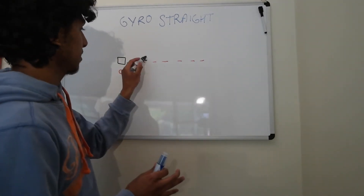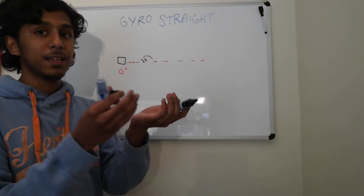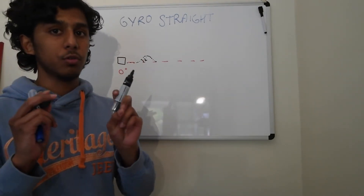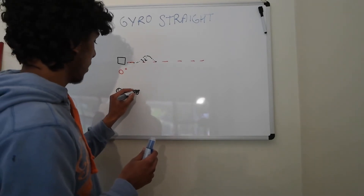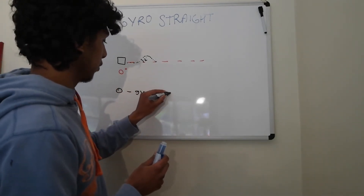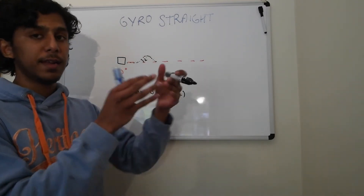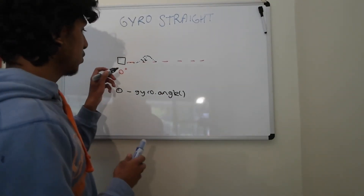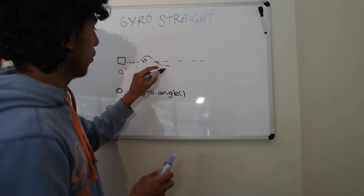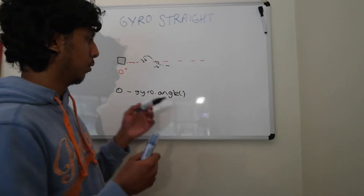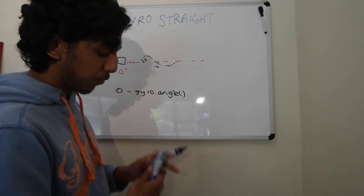What we want to do is make the robot veer back into its correct course — go back two degrees, or negative two degrees. Essentially we're going to do zero minus the gyro angle. The reason we do this is because it negates the gyro angle and provides a correction in the opposite direction. So if it then goes negative two degrees the other way, we do zero minus negative two, which equals positive two, and it goes back into the straight direction.